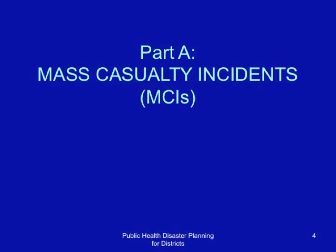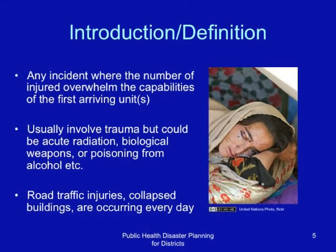In this session, we shall talk about mass casualty incidents. A mass casualty incident is any incident where the number of injured overwhelms the capabilities of the first-arriving responders. They usually involve trauma, but could be acute radiation, biological weapons, or poisoning. They could be bomb blasts, transportation crashes, road traffic injuries, or collapsed buildings, which are common every day.